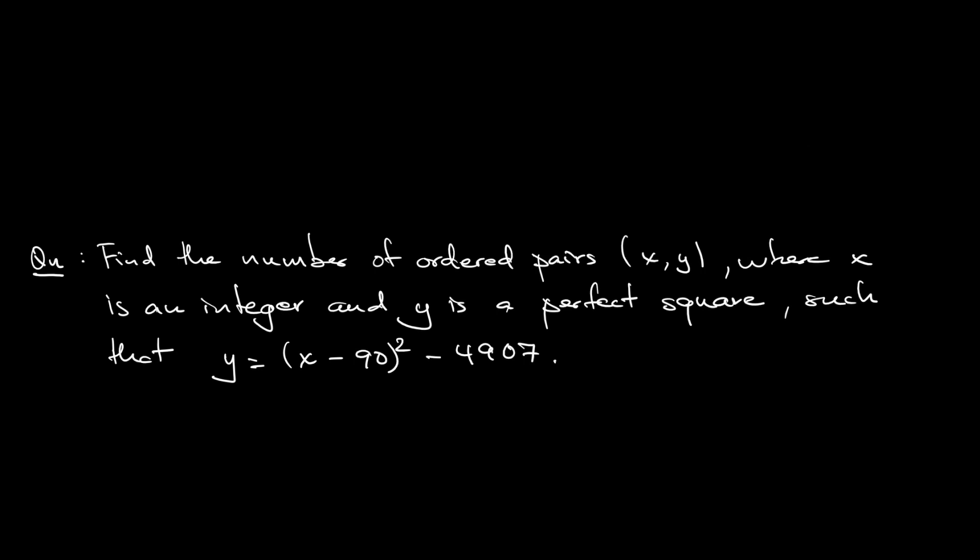So it is a number 3 question. Find the number of ordered pairs (x, y) where x is an integer and y is a perfect square, with the condition that y is equal to the square of (x minus 90) minus 4907.